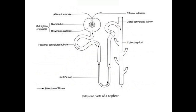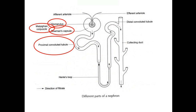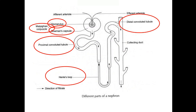Here's the diagram of the nephron. I will only label the important parts: glomerulus, Bowman's capsule — together which is called the malpighian corpuscle — proximal convoluted tubule, Henle's loop, distal convoluted tubule, and the collecting duct. Keep this diagram in mind throughout the video.